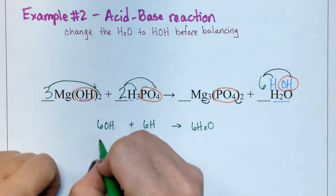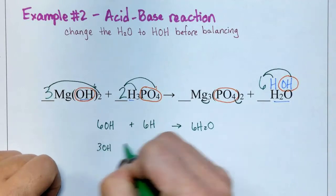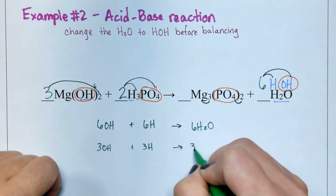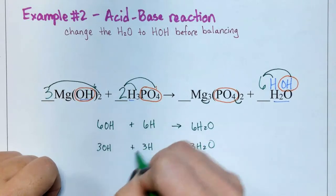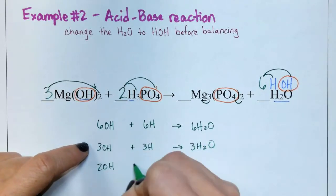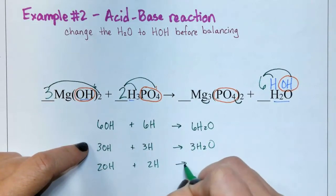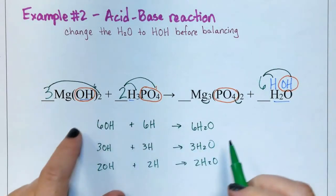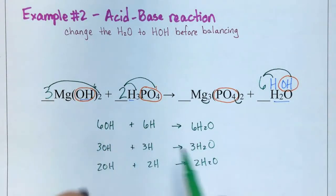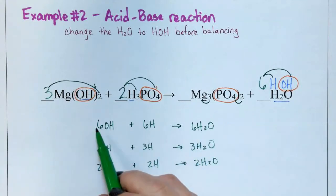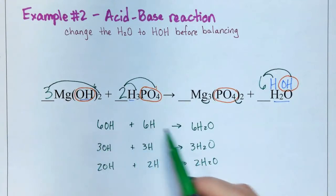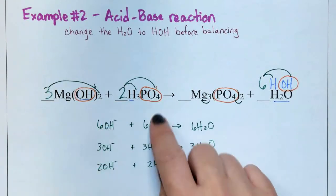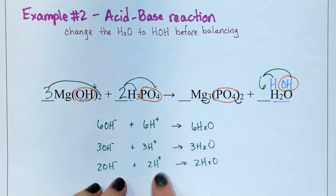Another example would be three hydroxides and three hydrogens, which means they should make three waters. Or if you see two hydroxides plus two hydrogens, they should yield two waters. It just depends, but at the end of a balancing, you'll tend to see this kind of pattern with the hydroxides, the hydrogens, and the waters. Note that hydroxides all carry a negative one charge, and the hydrogens carry a positive one.